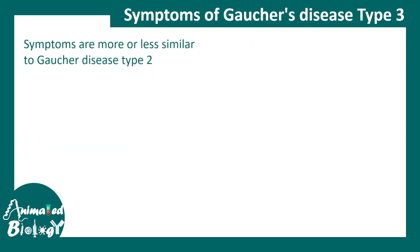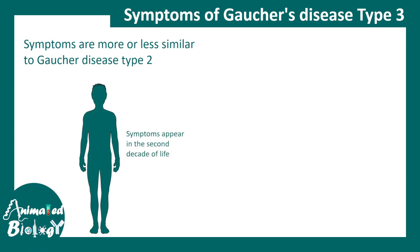Gaucher disease type 3 is intermediate in severity — more severe than type 1 but less severe than type 2. In this case, symptoms appear in the second decade of life, making it a late-onset presentation.